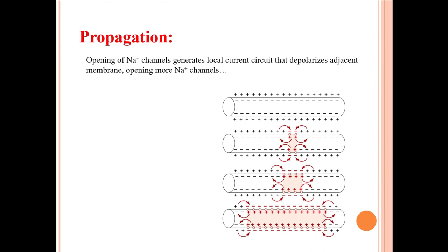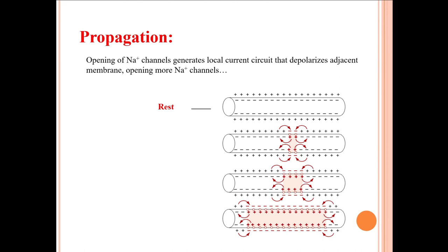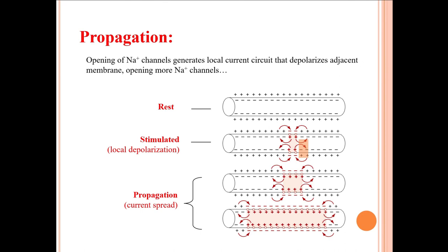Regarding propagation: opening of sodium channels generates a local current circuit that depolarizes the adjacent membrane, opening more sodium channels, and this continues. A stimulus causes local depolarization, and the wave of depolarization travels further, depolarizing adjacent cell membrane and propagating along the entire length of the axon — this is how the action potential travels.